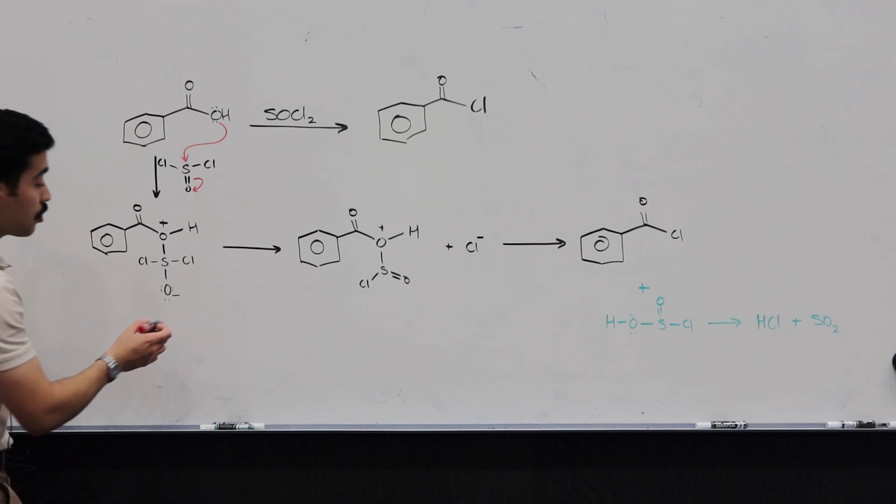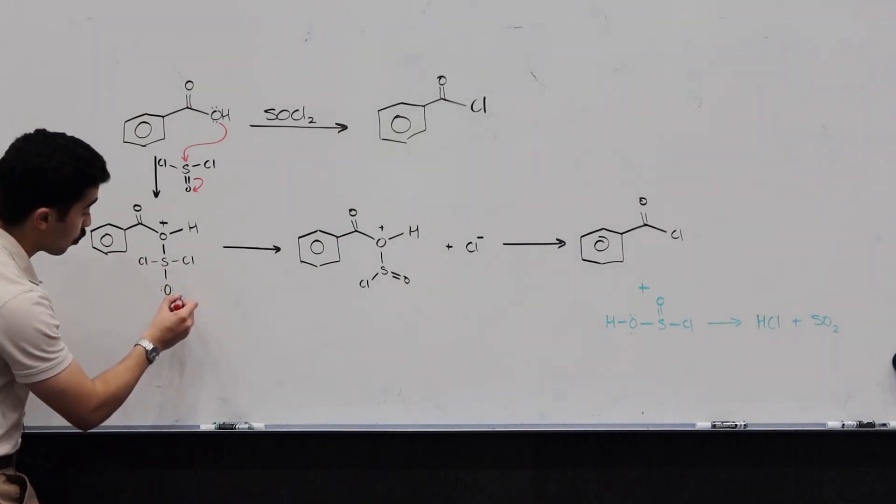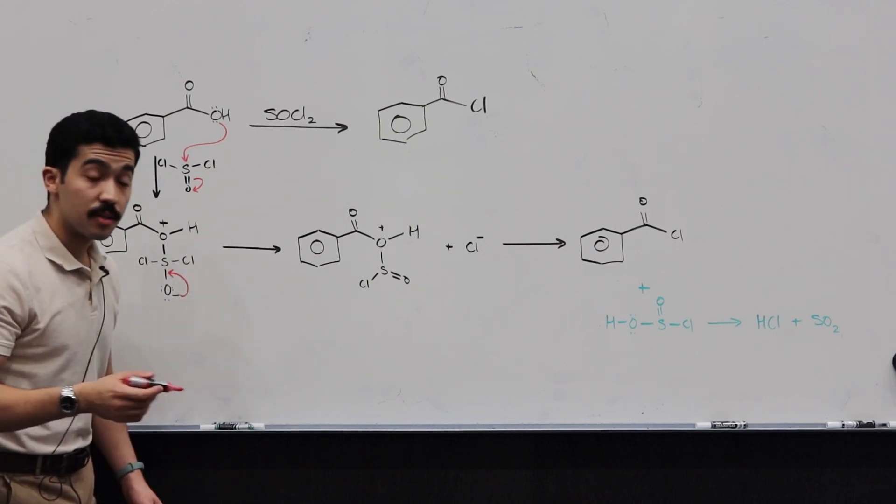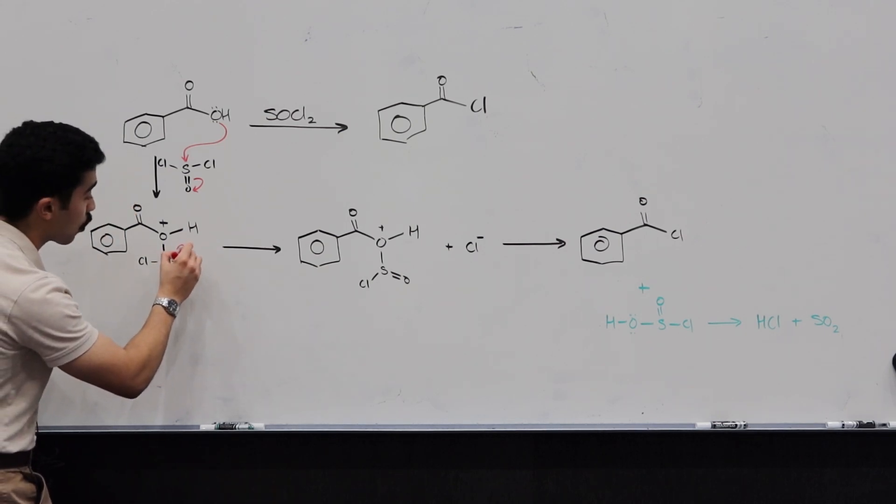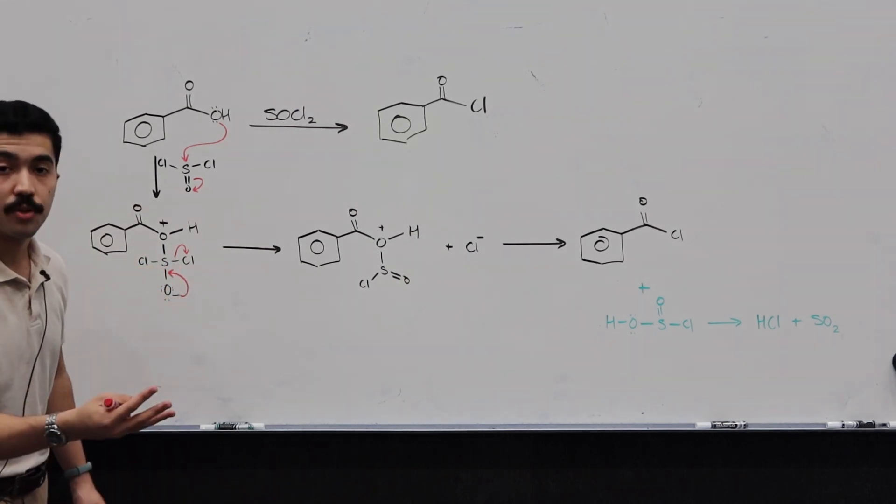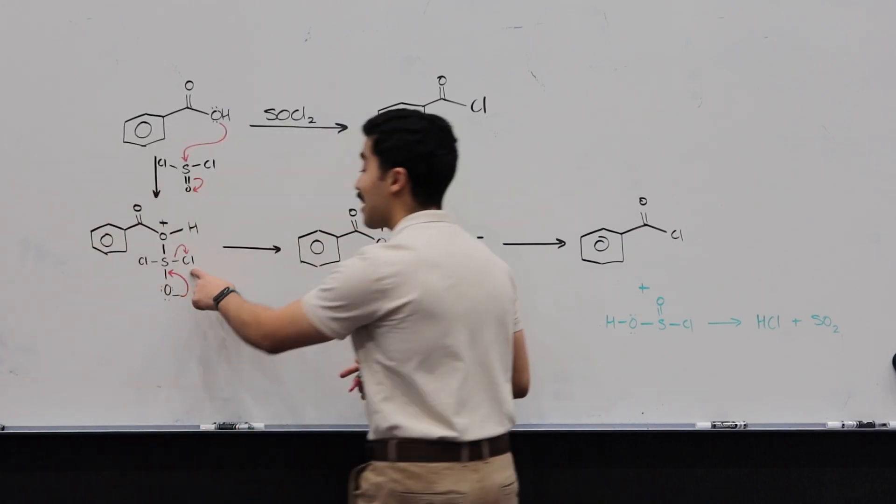Now, the next step that's going to happen is you're going to have the oxygen donate these electrons, rebuilding the double bond. It will donate these electrons, rebuilding that double bond. And what's going to happen next is you're going to kick out one of these chlorine atoms. You can kick out this one or this one. Entirely up to you. You end up with the same final product.